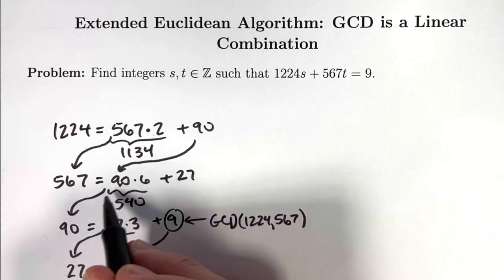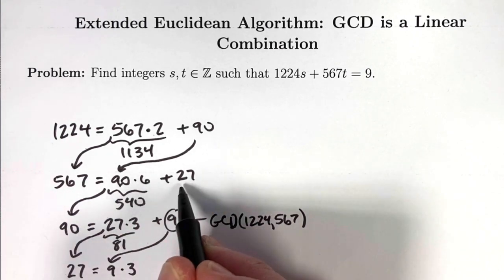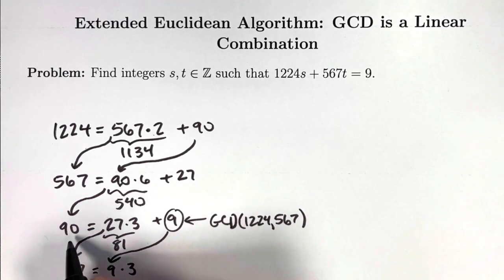Repeat that process. Now take 90, divide by that remainder of 27. 90 is 27 times 3, the quotient is 3, plus 9. The remainder is 9.